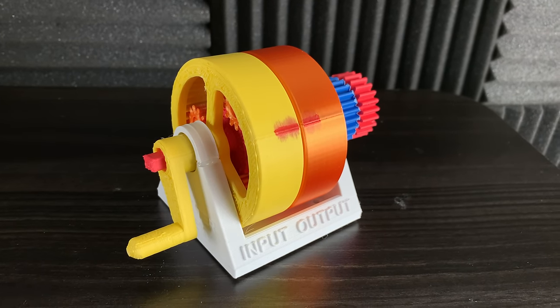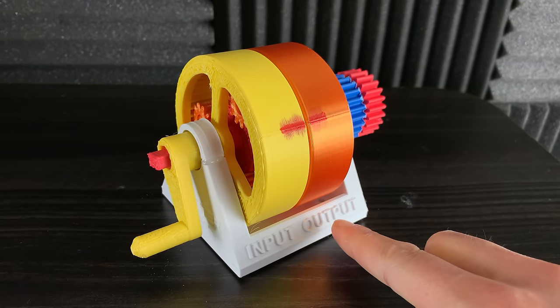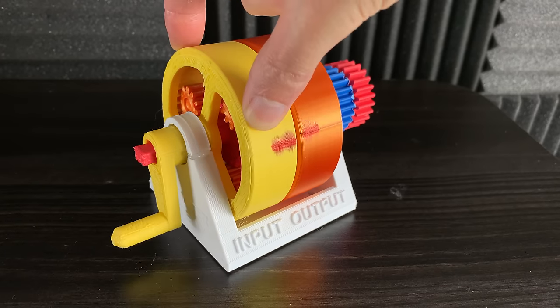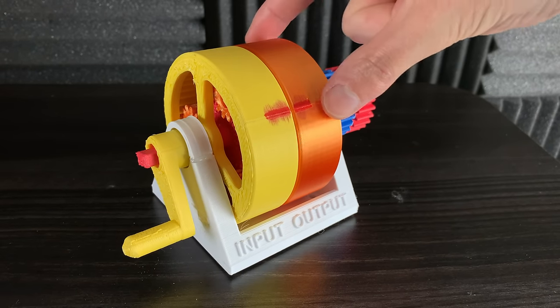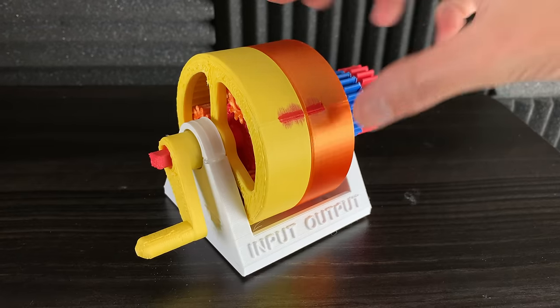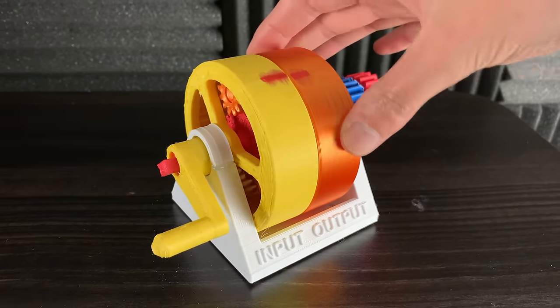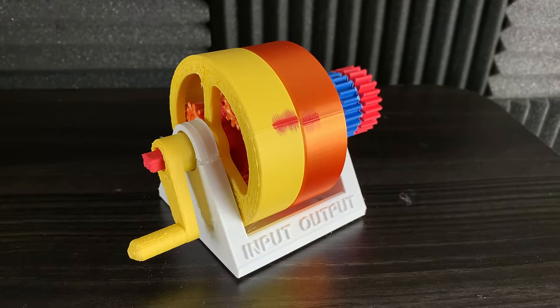The first thing you'll notice is that there's an input and an output. In this case, the input is this yellow ring gear and yellow handle, and the output is this orange ring gear. Right now, there's nothing engaged, so they both spin at the exact same speed. This is what's called direct drive, where the input is exactly the same as the output.